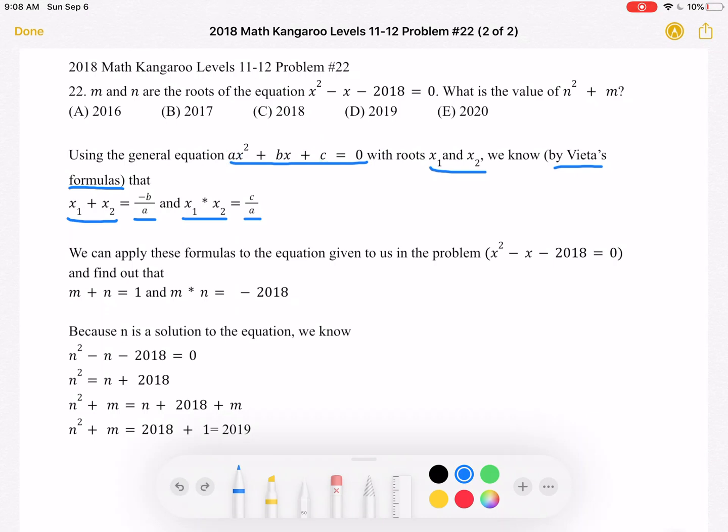We can apply these formulas to the equation given to us in the problem, x² - x - 2018 = 0. And we can find out, because we know that m and n are the roots of the equation,